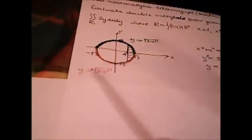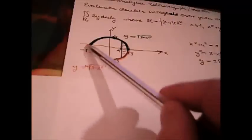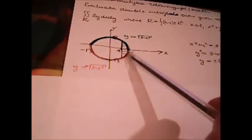When we have y equals minus the square root of 3 minus x squared, value of y is non-positive. This is semicircle below x-axis.